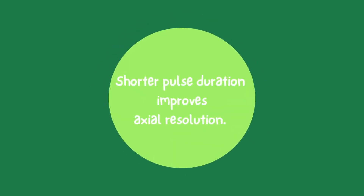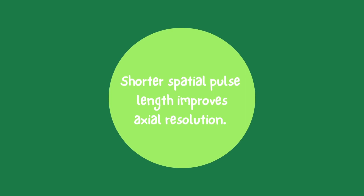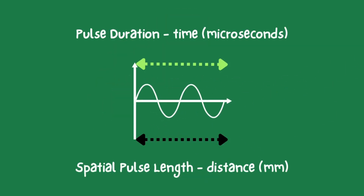We'll talk more about axial resolution in another video, but the key point is that shorter pulses are better for axial resolution and therefore better for accurate imaging. Now let's shed some light on spatial pulse length, or SPL. SPL refers to the actual length of an ultrasound pulse as it travels through the body, typically measured in units of distance like millimeters. SPL plays an important role in determining sharpness and clarity along the axial direction as well — shorter SPL values lead to better axial resolution, while longer SPL values result in reduced axial resolution, making it harder to distinguish between closely spaced structures. Note that although pulse duration and SPL appear similar, they are two different things: pulse duration refers to the time from start to end of a pulse, while SPL refers to the actual physical distance or length of that pulse.